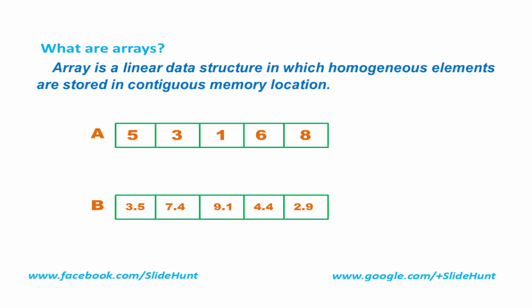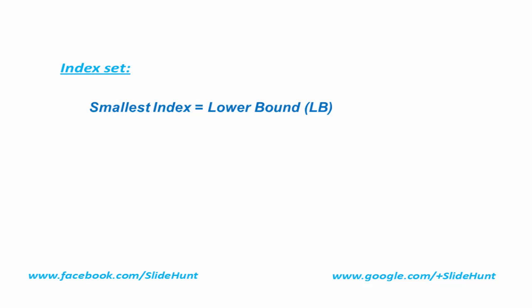The next thing we learn is called the index set. If a linear array has n elements, then the elements of the linear array are referenced respectively by a set of n consecutive numbers called the index set. The smallest index is called the lower bound and the largest index is called the upper bound.